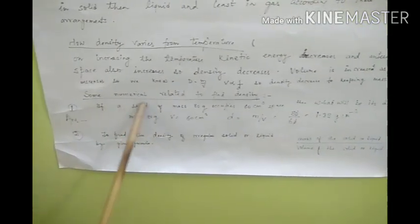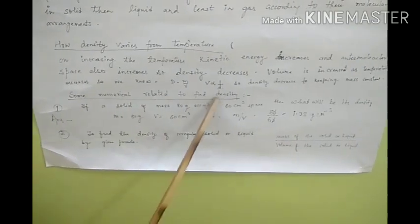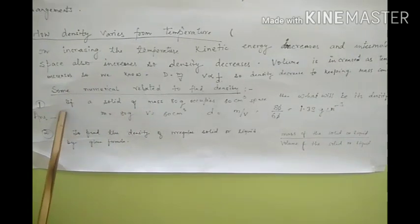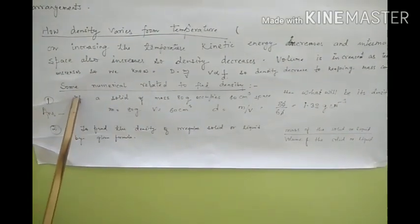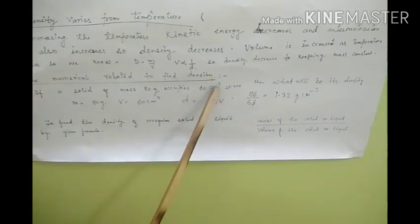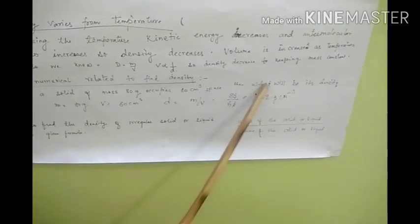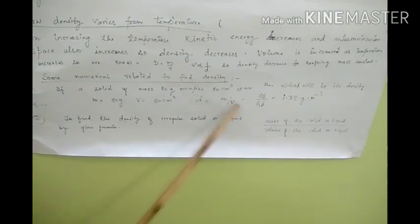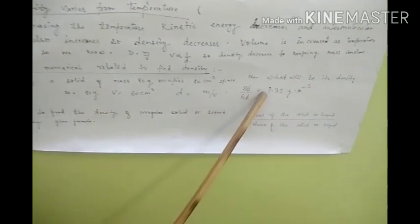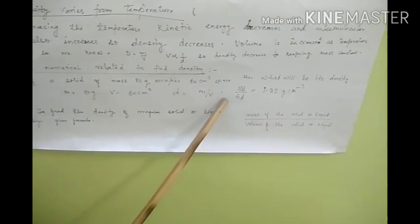Some numerical problems to find the density of an object. Here's a numerical problem: If a solid of mass 80 grams occupies 60 centimeter cube space, then what will be its density? We know that density is equal to mass by volume. Given mass 80 grams and volume 60 centimeter cube, we can easily find the density of an object.